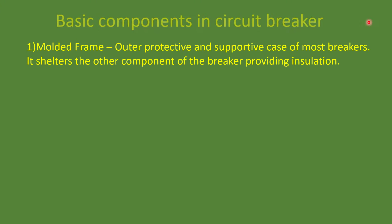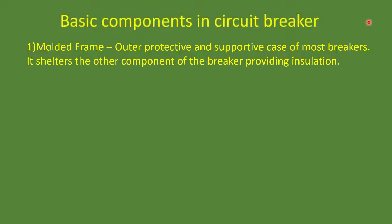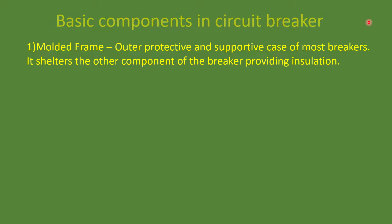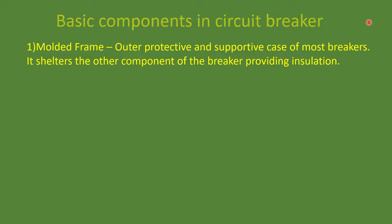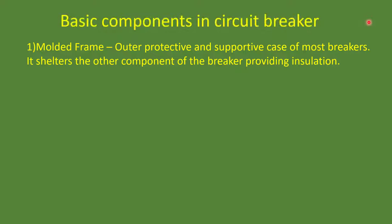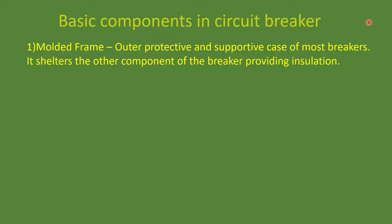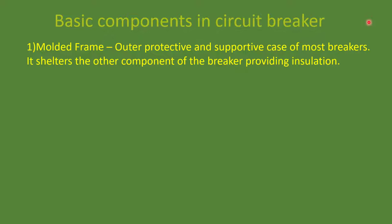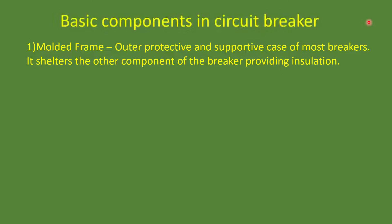What are the basic components in a circuit breaker? The first one is the molded frame. The molded frame is the outer case or outer frame. Every component sits inside that frame — it provides the housing for all other components and also provides insulation.